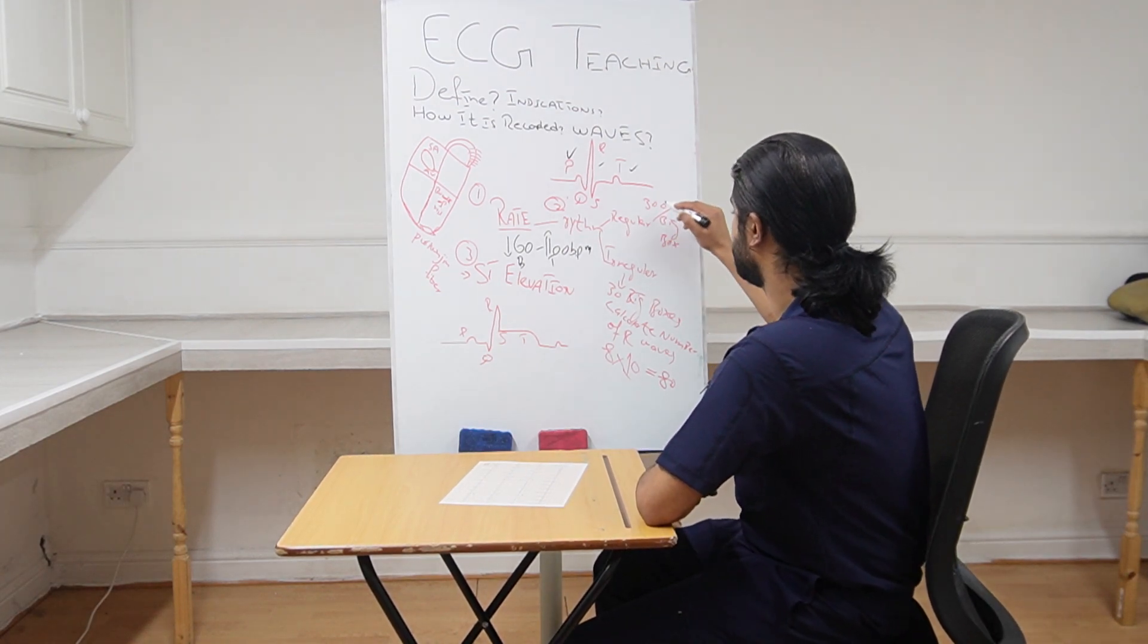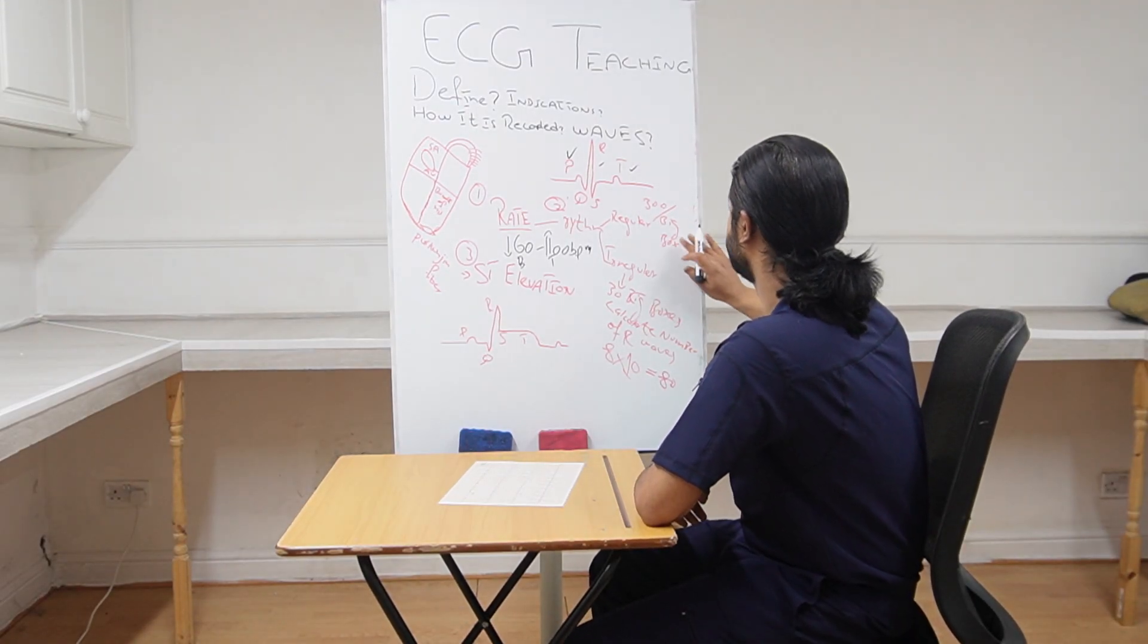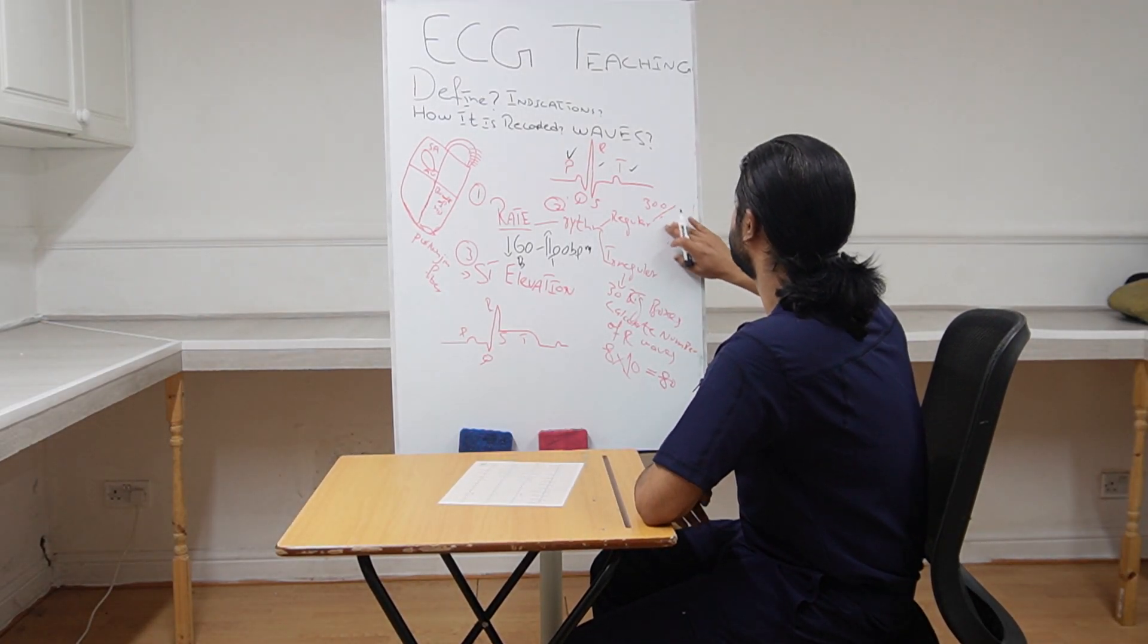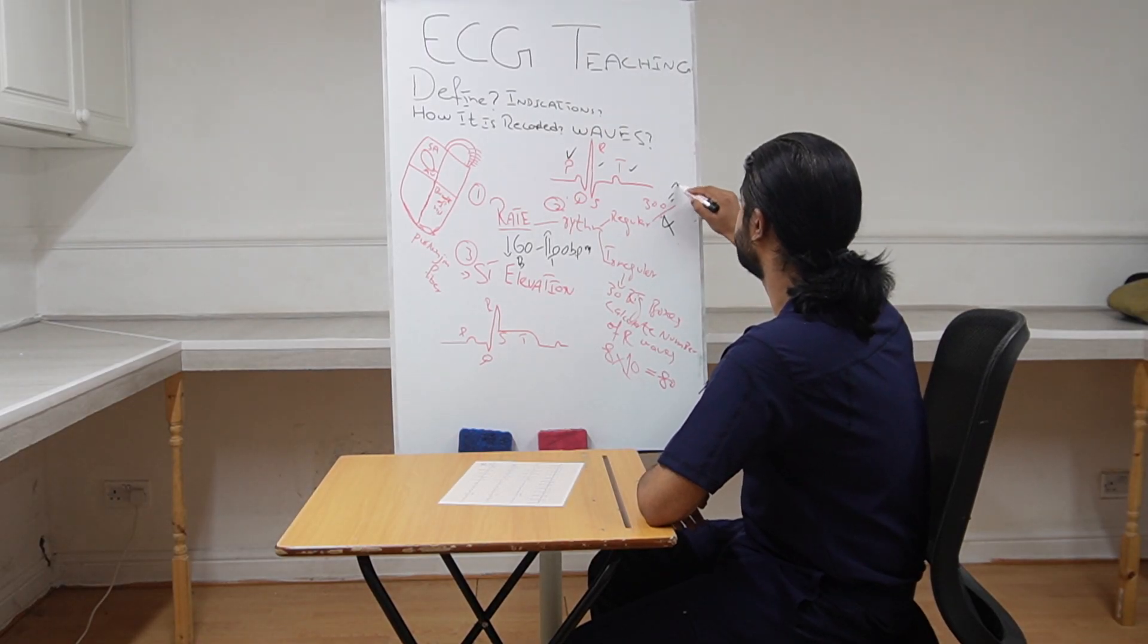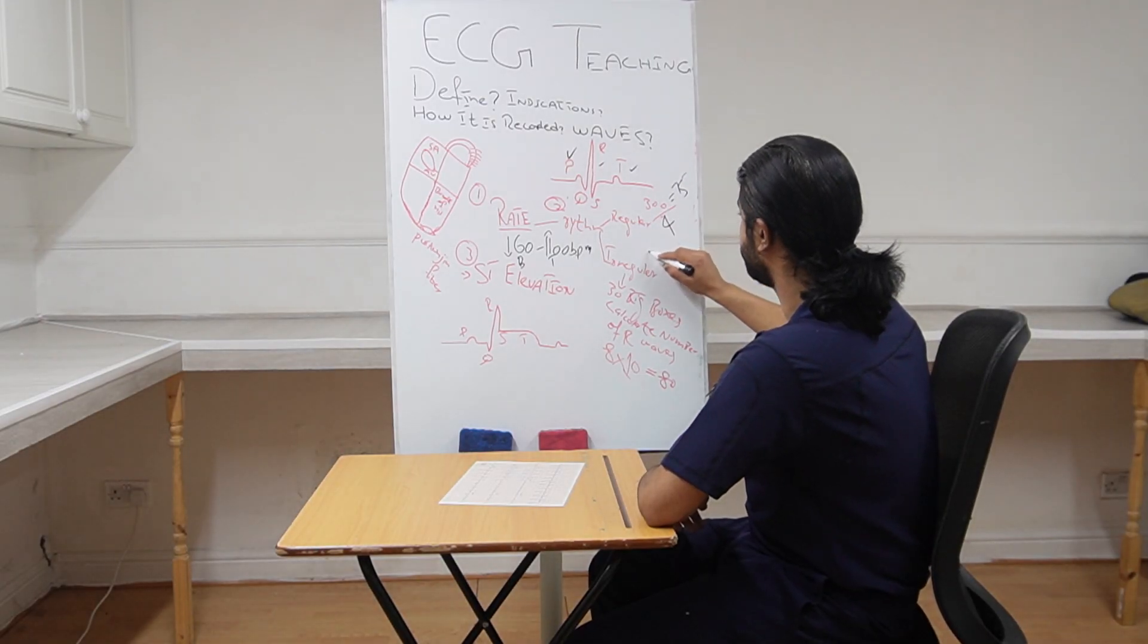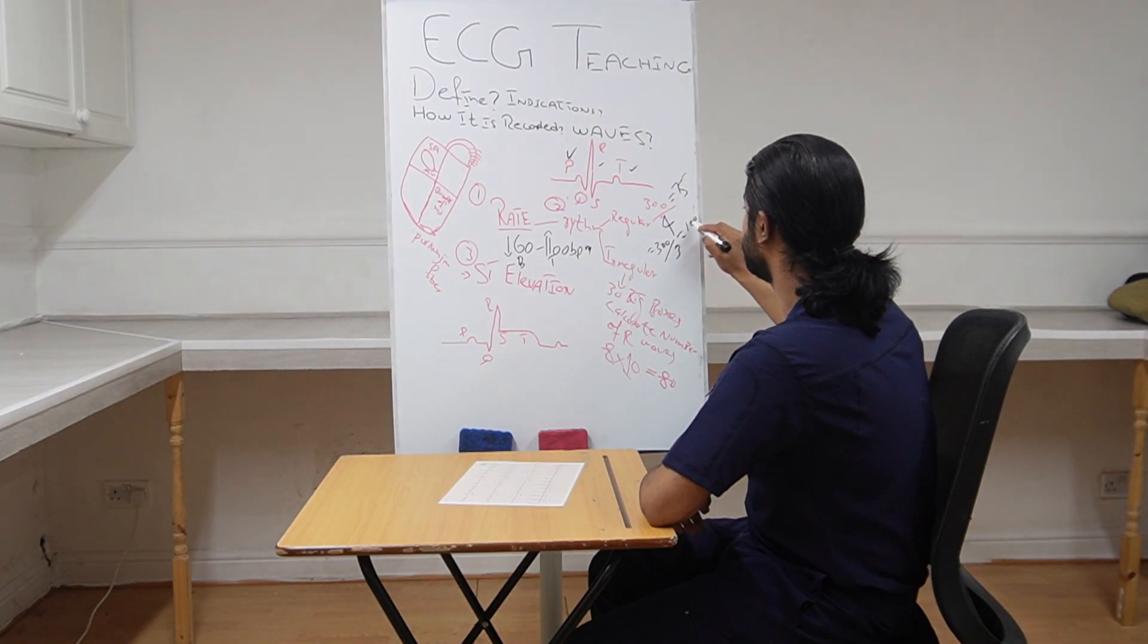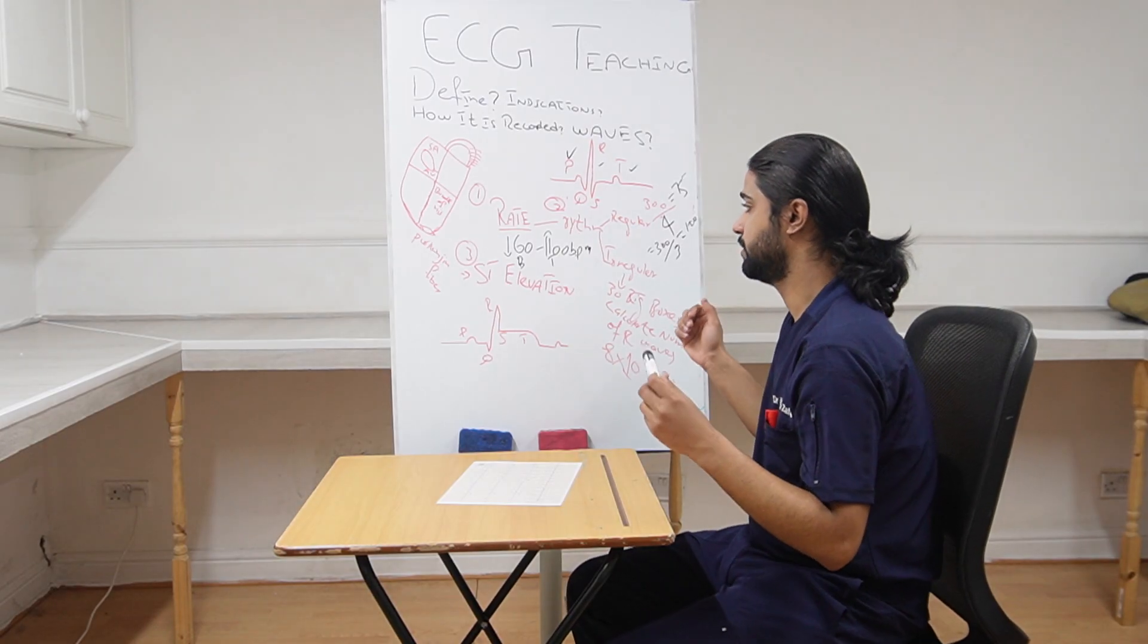Suppose if the number of big boxes between two R waves in this ECG is four, then we will divide 300 divided by four, that is 75. And if the number of big boxes is three between two R waves, divide 300 by three and it is 100. So this is how to calculate the rate if the rhythm is regular.